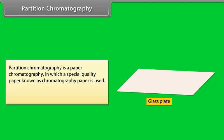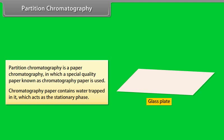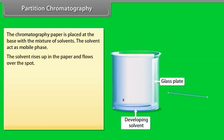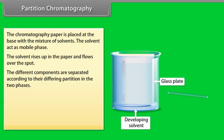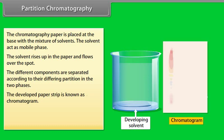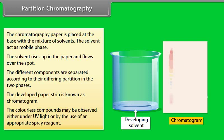Partition chromatography is a paper chromatography in which a special quality chromatography paper is used. The chromatography paper contains water trapped in it, which acts as the stationary phase. The paper is placed with a mixture of solvents, which acts as the mobile phase. The solvent rises up in the paper and flows over the spot, and the different components are separated according to their differing partition between the two phases. The developed paper strip is known as the chromatogram. Colourless compounds may be observed either under UV light or by use of an appropriate spray reagent.